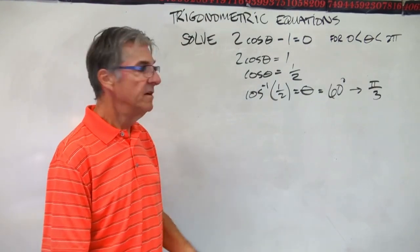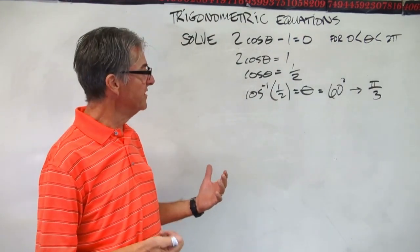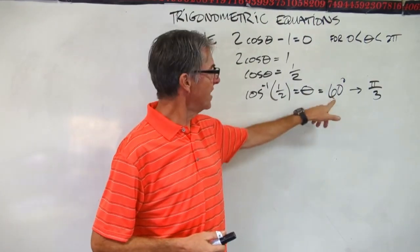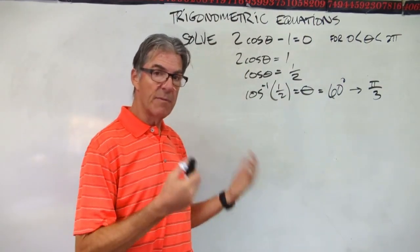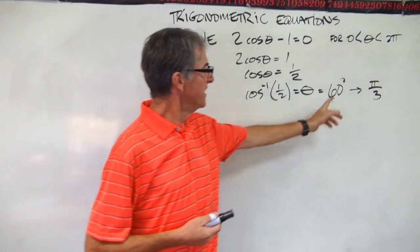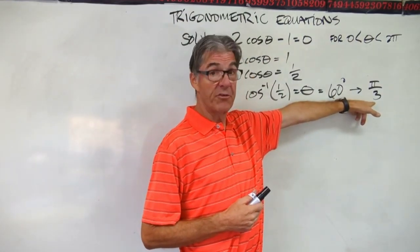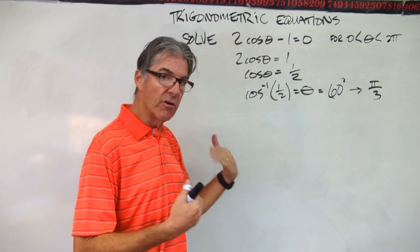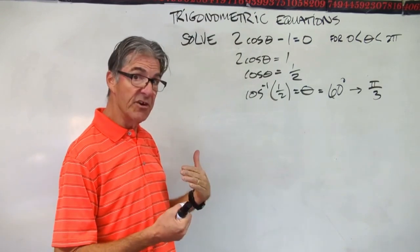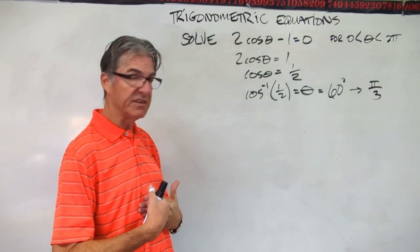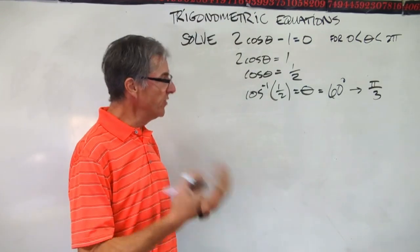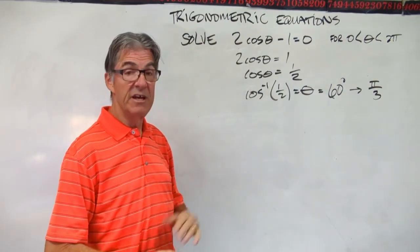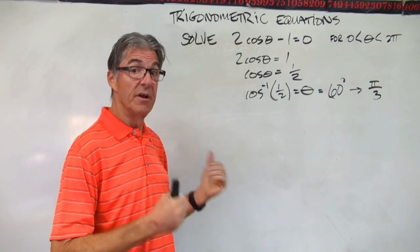I used my calculator in degrees. The inverse cosine of 1/2 gave me 60 degrees. Then I look at my unit circle: 60 degrees is pi over 3 radians. Remember, as you go around the unit circle, every 30 degrees is pi over 6. So 30 degrees is pi over 6, 60 degrees is pi over 3, 90 degrees is pi over 2, and so on.